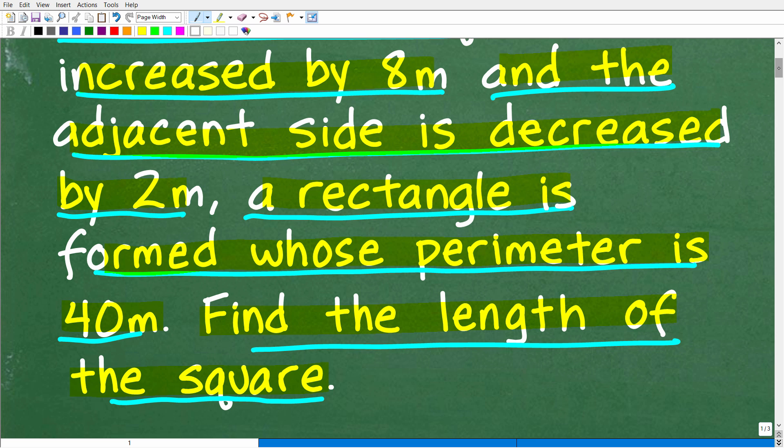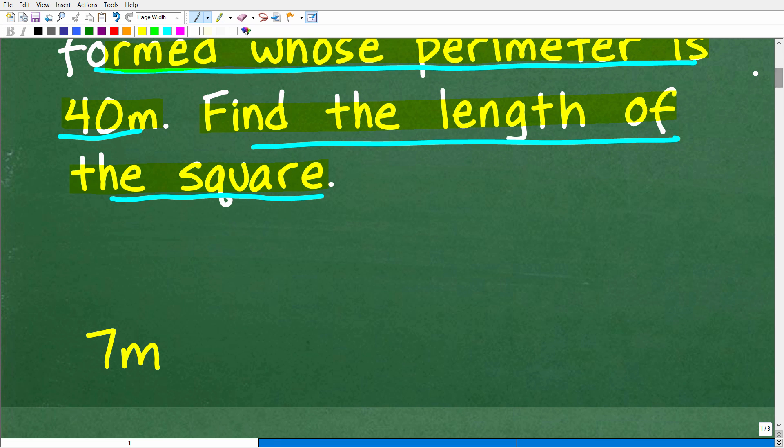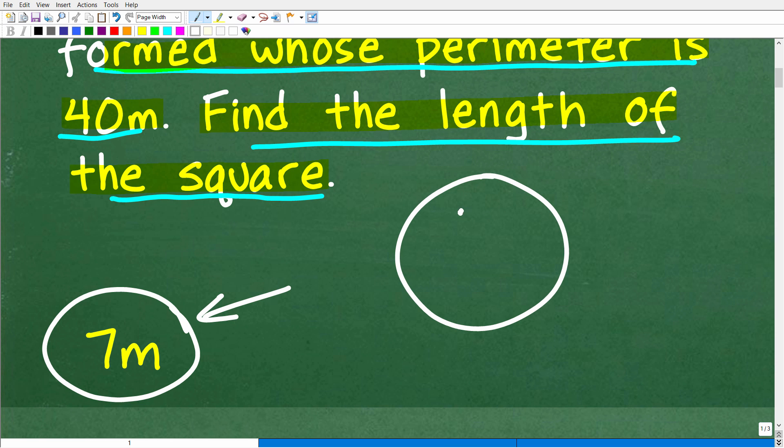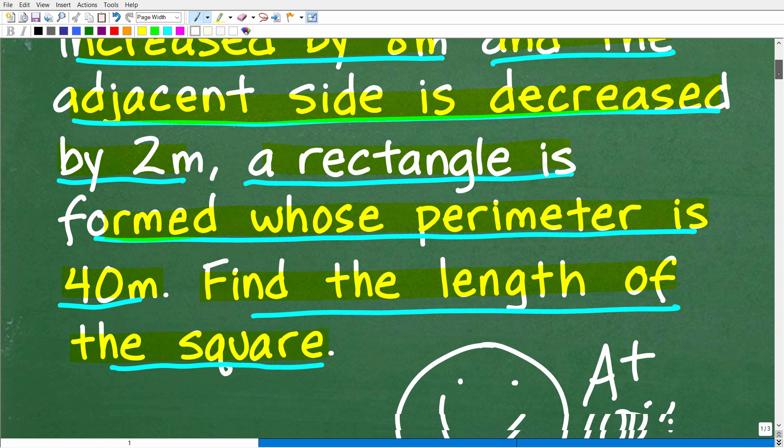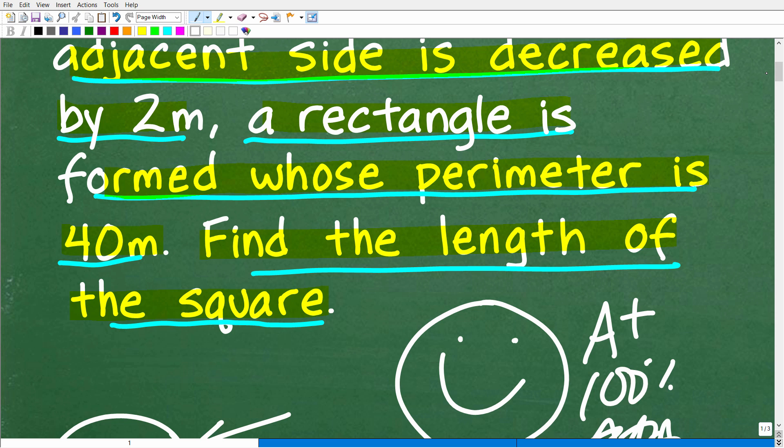All right, so let's take a look at the answer. The correct answer is 7 meters. All right, now if you got this right, that is fantastic. We have to celebrate by giving you a nice little happy face and A+, 100%, and multiple stars. So you can tell your friends and family that indeed you are a certified professional expert in solving basic algebra problems that involve the perimeter.